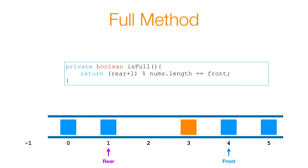Our isFull method is just as simple. As we've seen with the animation, if my next index is equal to the front index, then that means I have a full queue. So if (rear + 1) % nums.length equals my front index, then I'll simply return true. Otherwise, I'll return false.